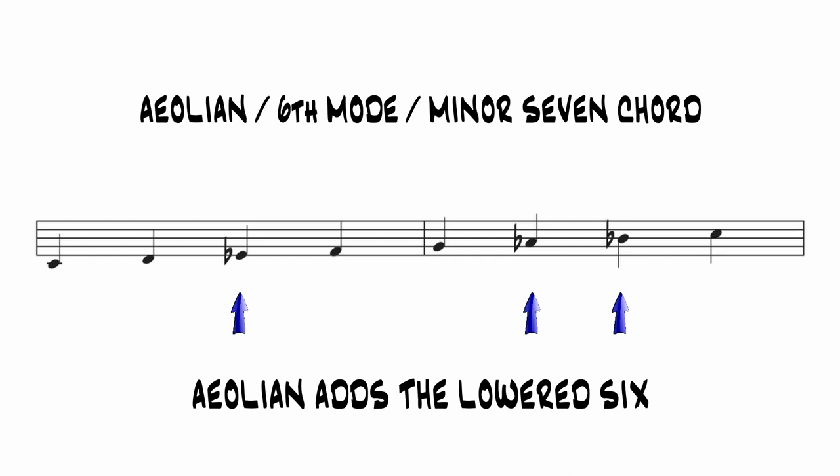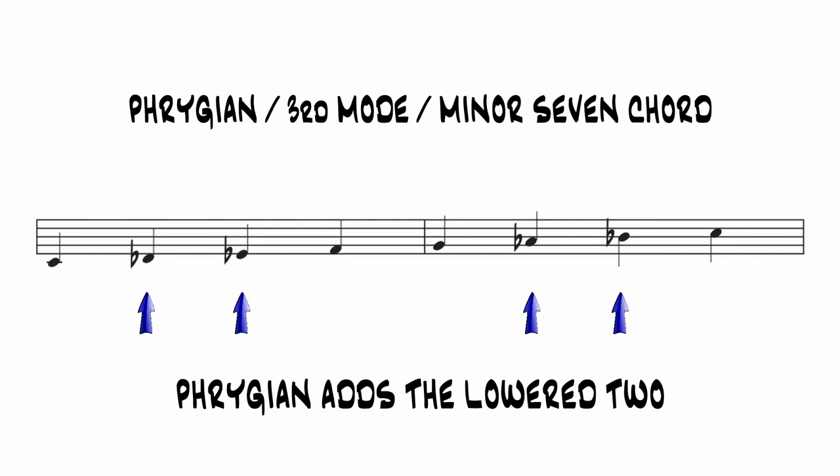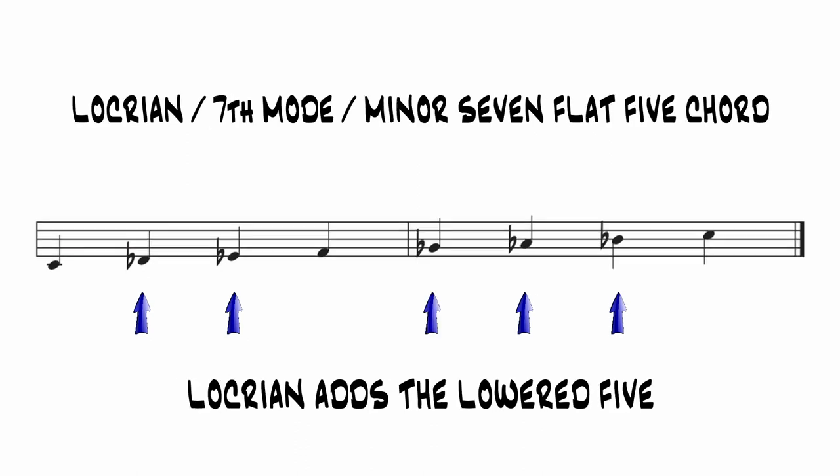What's a 5th below Ab? Db, which is the lowered 2 in the key of C. A scale with a lowered 7, a lowered 3, a lowered 6, and a lowered 2 is called Phrygian. Phrygian is the 3rd mode, and it produces a minor 7 chord built on the 3rd degree of the major scale. Finally, a 5th below Db is Gb, which is the lowered 5th in the key of C. A scale with a lowered 7, a lowered 3rd, a lowered 6, a lowered 2nd, and a lowered 5th is called Locrian. Locrian is the 7th mode, and it produces a minor 7 flat 5 chord built on the 7th degree of the major scale.